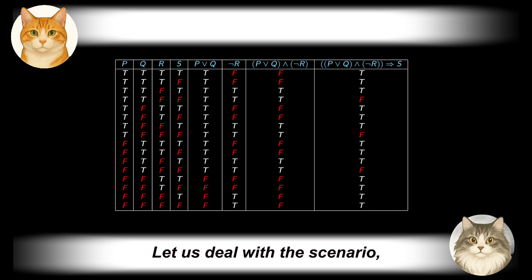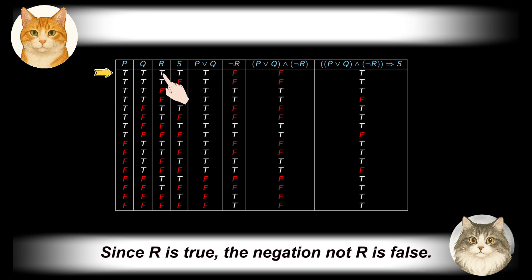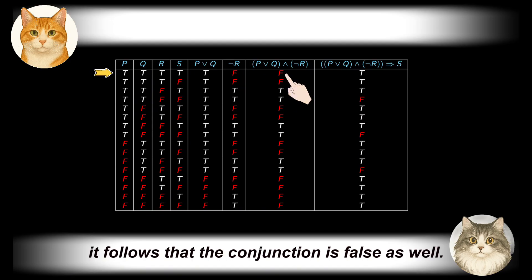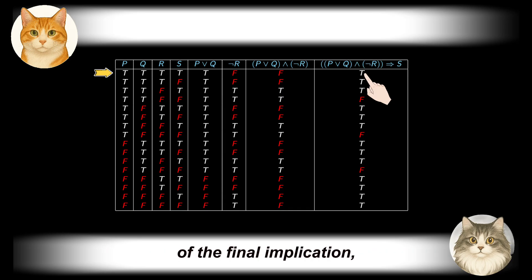Let us deal with the scenario where all the atomic propositions are true. Since P is true, the disjunction P or Q is true. Since R is true, the negation not R is false. Now that not R is false, it follows that the conjunction is false as well. But this conjunction serves as the antecedent of the final implication, and when the antecedent is false, the implication is true regardless of the truth value of the consequent. We conclude that the implication is true in this case.